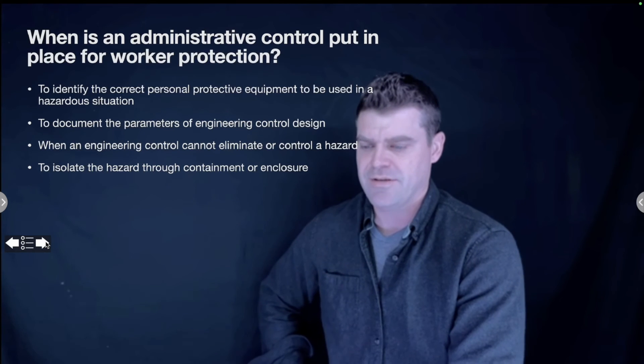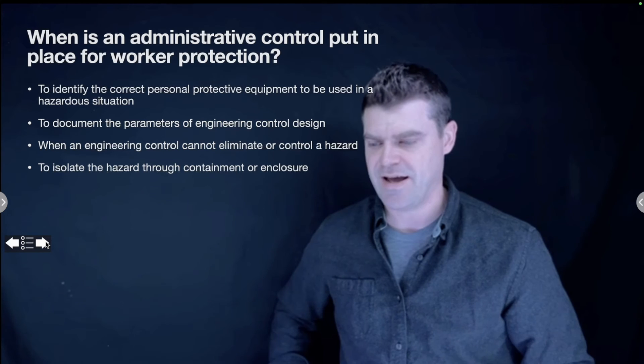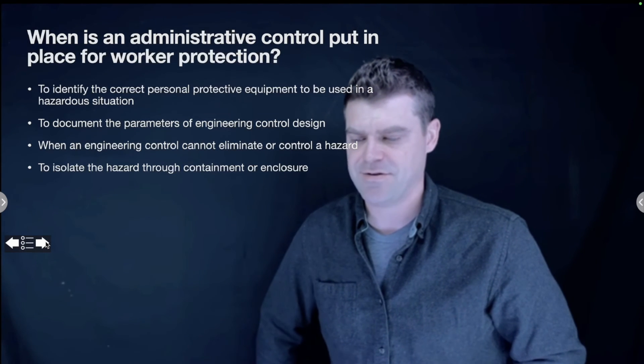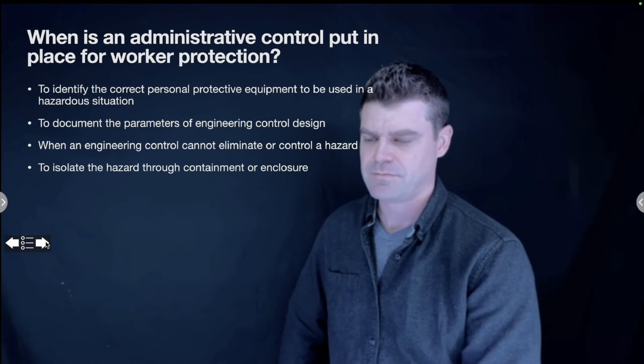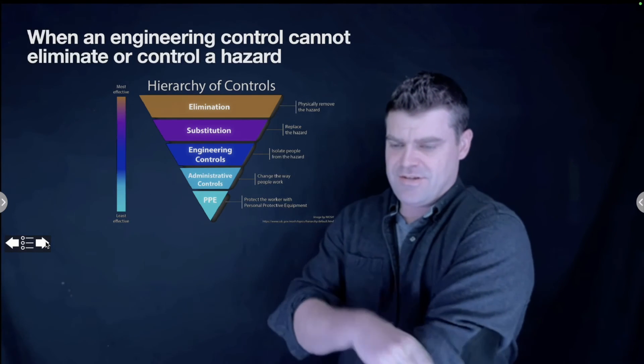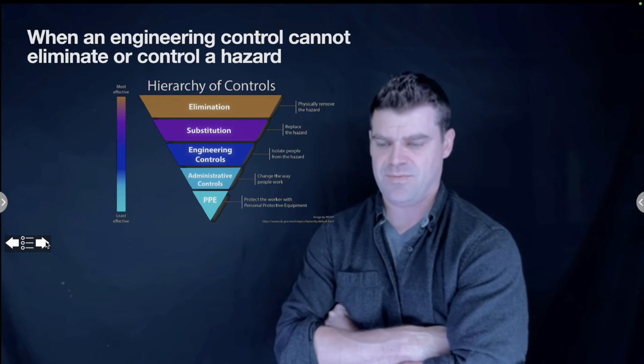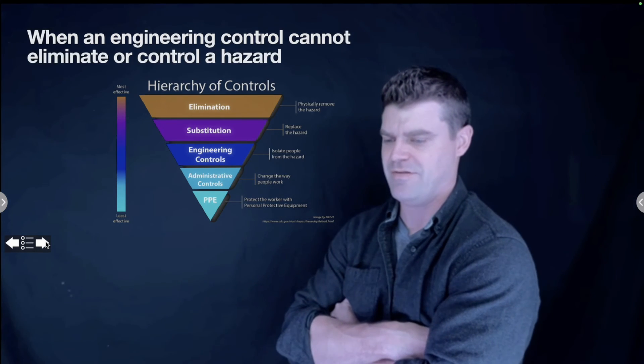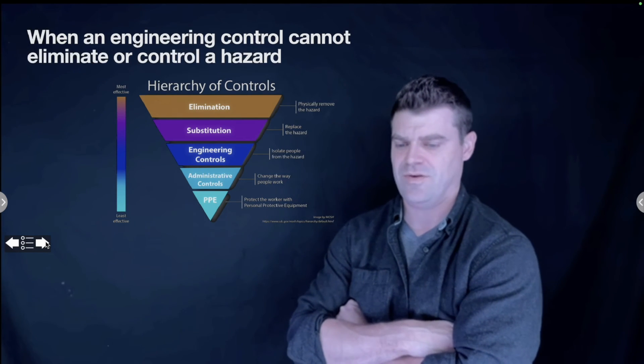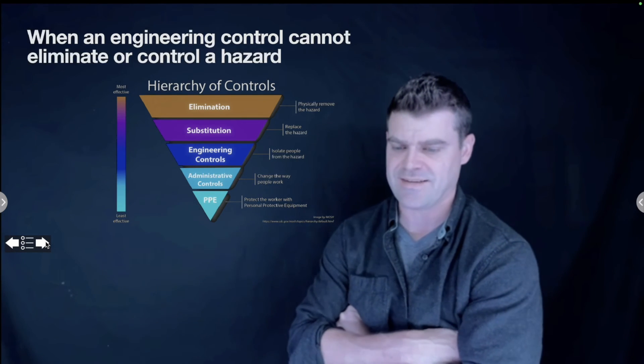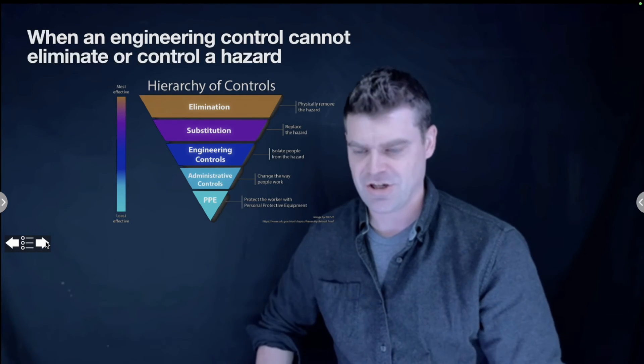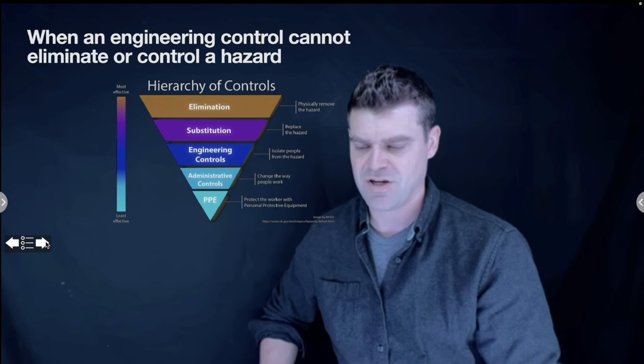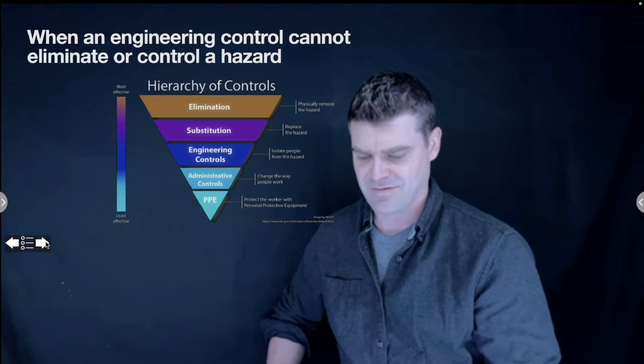When is an administrative control put in place for worker protection? To identify the correct personal protective equipment to be used in a hazardous situation, to document the parameters of engineering control design, when an engineering control cannot eliminate or control a hazard, or to isolate the hazard through containment or enclosure? The answer is when an engineering control cannot eliminate or control a hazard. This is your basic hierarchy of controls for safety. If you have a hazard that is present, the first thing that you want to try to do is to eliminate that hazard. If you can remove it from the workplace, that is the preferred method. If you can't get rid of it, maybe you can substitute it for something less hazardous. If you can't do that, then you have to put some kind of engineering control like ventilation or some kind of interlock. If you can't do that, then there's an administrative control where you'd put in some kind of workplace safe work situation. And then the last line of defense is your PPE or some kind of protective gear that would protect you from that hazard.